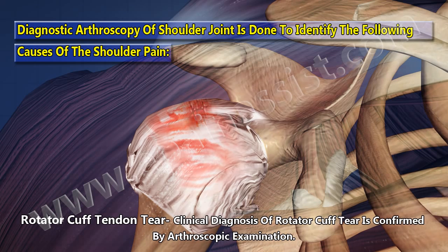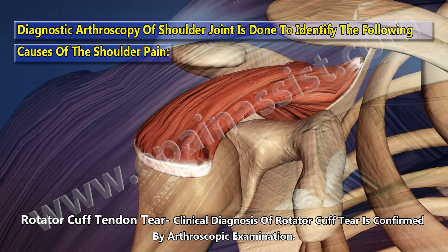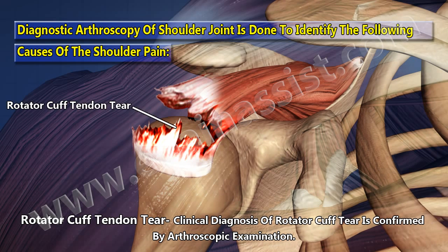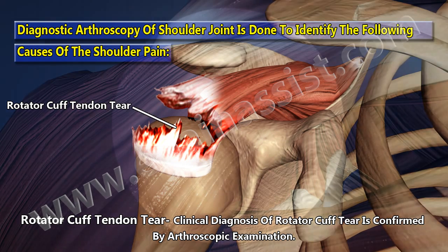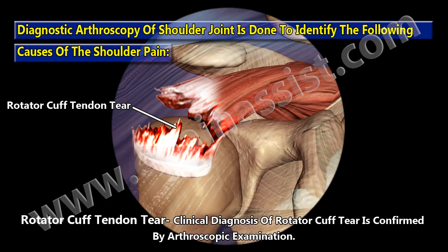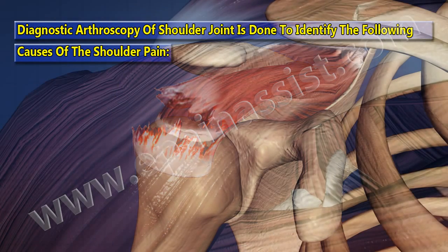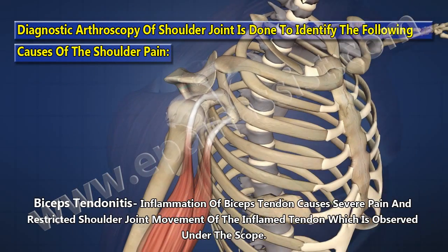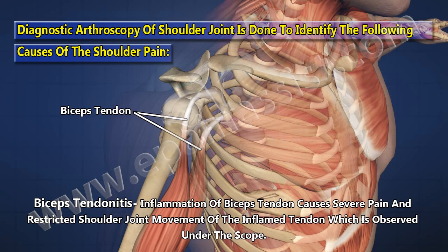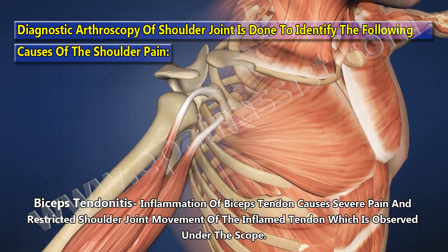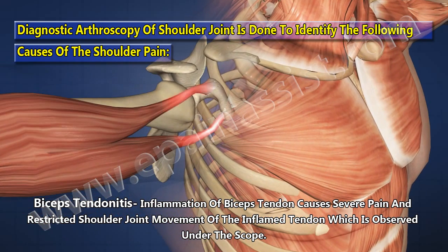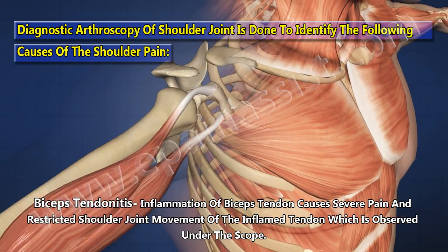Rotator cuff tendon tear — clinical diagnosis of rotator cuff tear is confirmed by arthroscopic examination. Biceps tendonitis involves inflammation of the biceps tendon, causing severe pain and restricted shoulder joint movement. The inflamed tendon is observed under the scope.